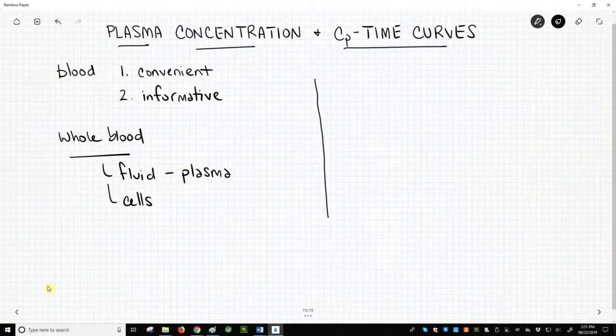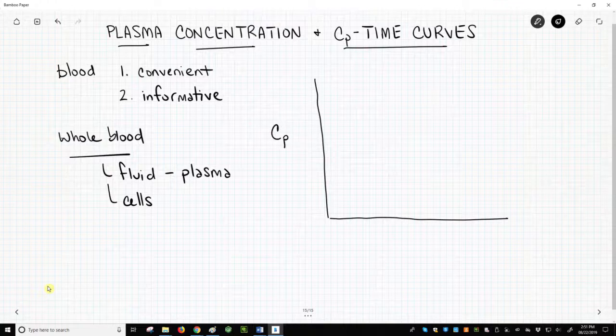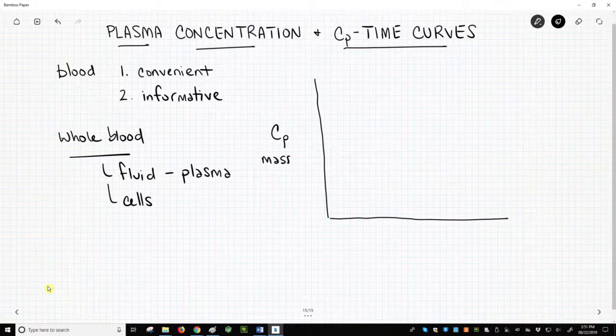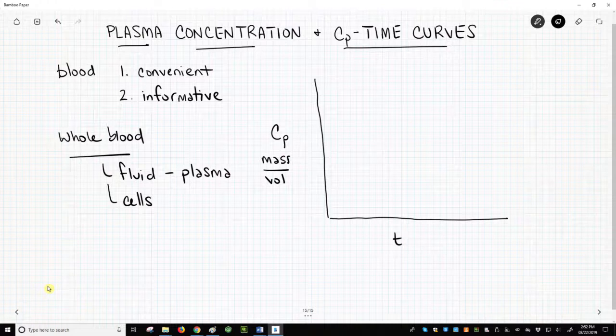So we'll draw axes. There's our y-axis, followed by our x-axis. Our y-axis is plasma concentration. This is typically mass over volume, micrograms per liter, something like that, and then the x-axis is time.